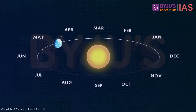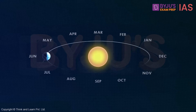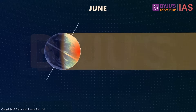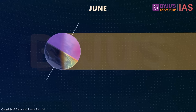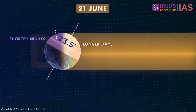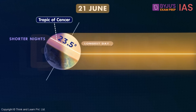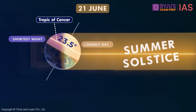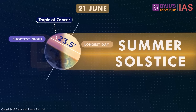The earth moves in its orbit, and about three months later in the month of June, it reaches this position. As you can see, in this position the northern hemisphere is tilted towards the sun. Consequently, the northern hemisphere will experience longer days and shorter nights. On 21st June, the sunlight is directly overhead at the Tropic of Cancer, and the northern hemisphere experiences its longest day and shortest night of the year. This is what we call the summer solstice or the June solstice.